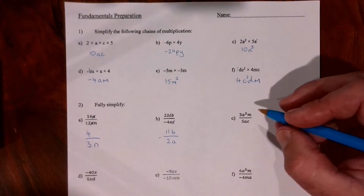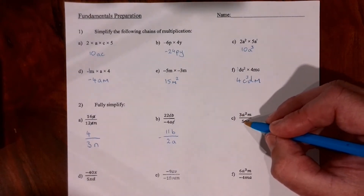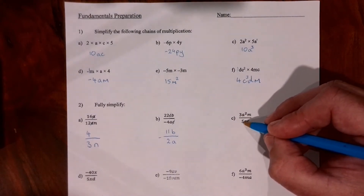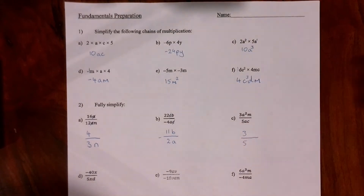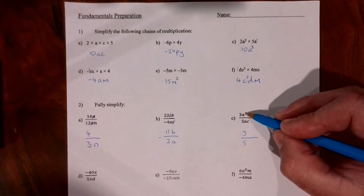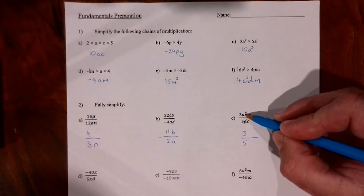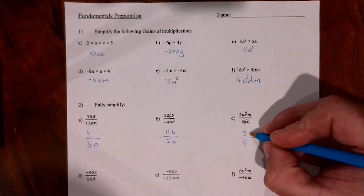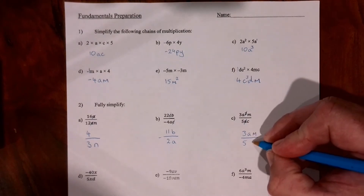Question 2c: this time I've got 3 over 5. That can't be simplified further, so it remains. The only difference here is that a is multiplied by itself on top and there's a 1 on the bottom, so the bottom a eliminates one of the top a's, leaving a single a. The m and c stay as they are.